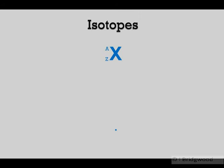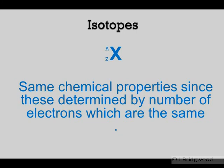Now isotopes will have the same chemical properties in all cases because they have the same number of protons and the same number of electrons. The number of neutrons may change, but that will not affect the chemical properties.